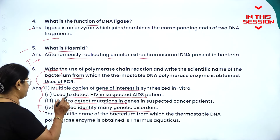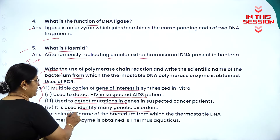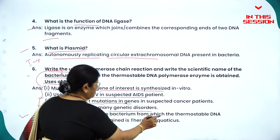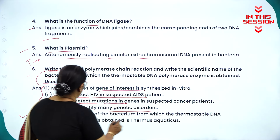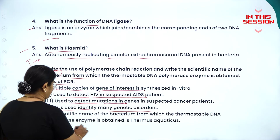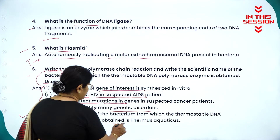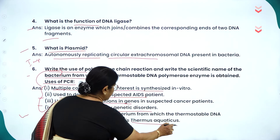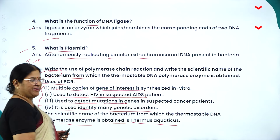Write the scientific name of the bacterium from which the thermostable polymerase enzyme is obtained: Thermus aquaticus.